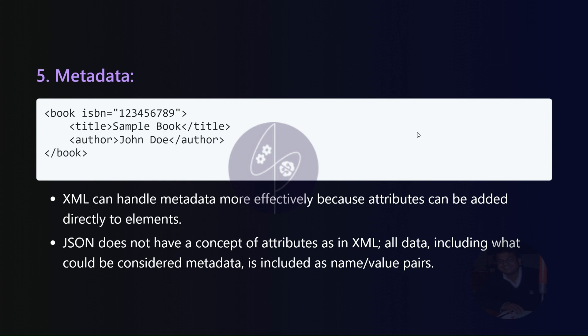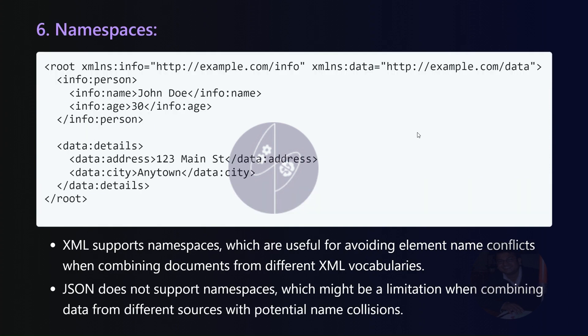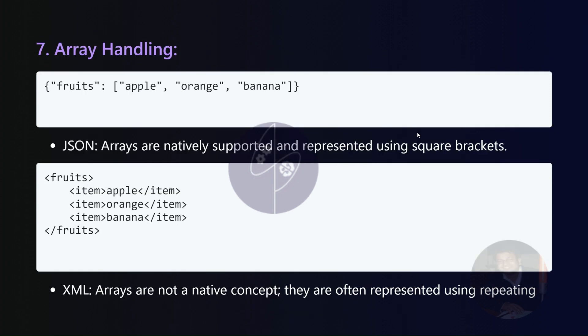Namespaces. XML introduces the concept of namespaces, valuable for preventing element name conflicts when merging documents from distinct XML vocabularies. JSON, however, lacks native support for namespaces, potentially limiting its utility in combining data from diverse sources.